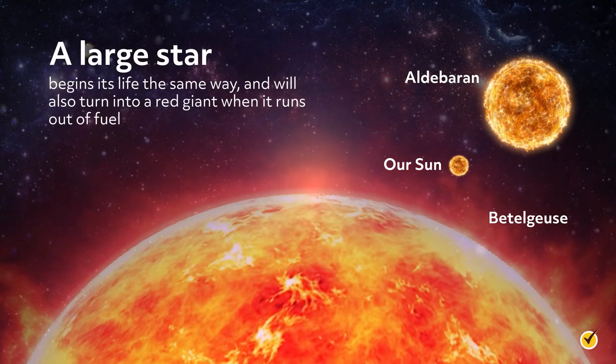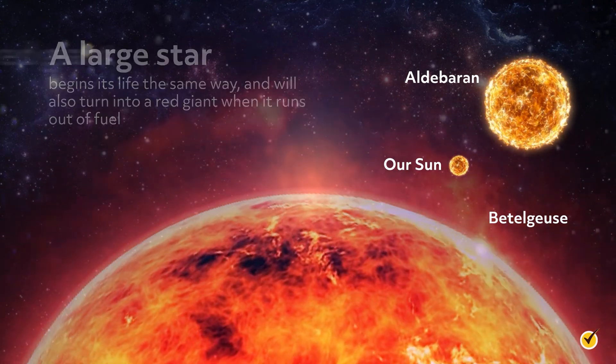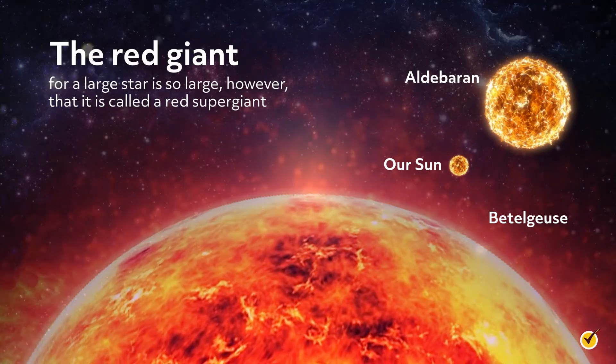A large star begins its life the same way, and will also turn into a red giant when it runs out of fuel. The red giant for a large star is so large, however, that it's called a red supergiant.